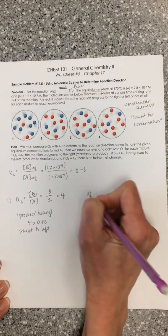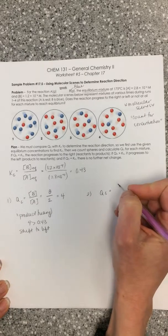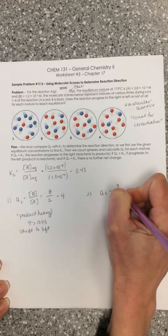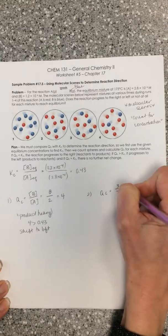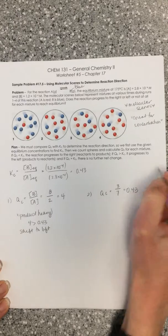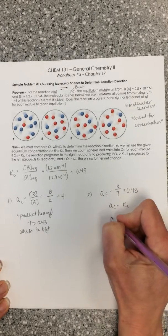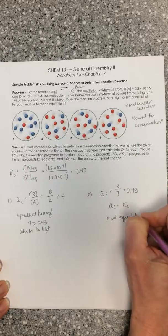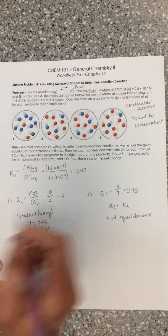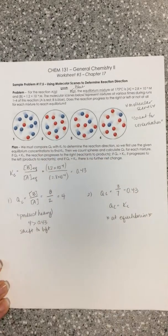Let's go through these other molecular scenes. Again, QC for molecular scene two is going to be three blue spheres. We've got seven red spheres. That's 0.43. So in this case, Q equals K, which means we are at equilibrium. Where we are at represents where we want to be.